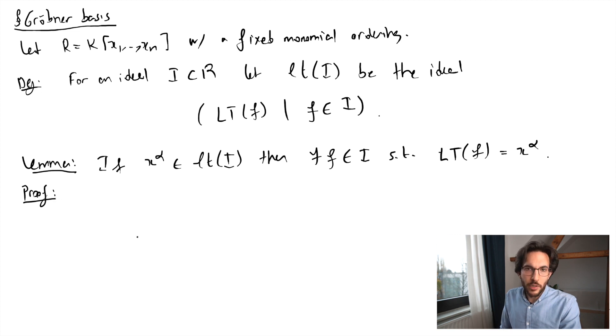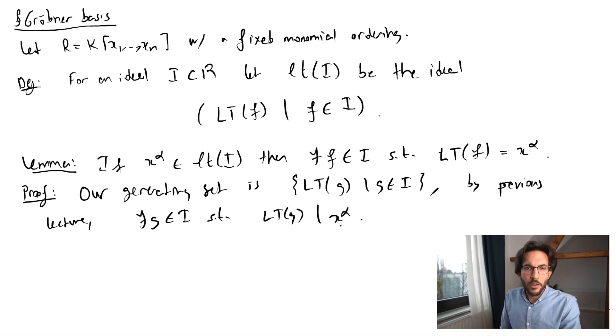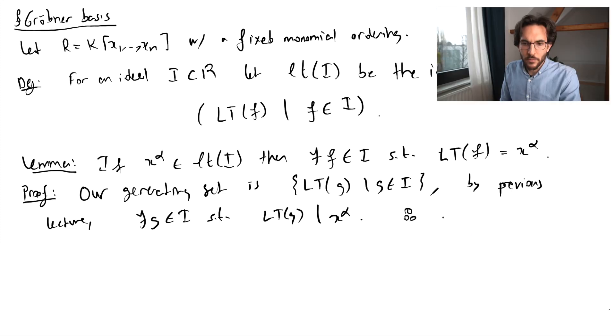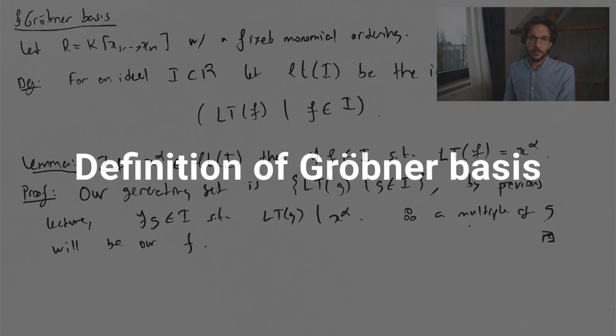So we're just going to reduce it to the simple observations that we have made about monomial ideals. One of them was that whenever you have a monomial inside a monomial ideal, then one of your generators divides this monomial. Now our generating set is just the leading terms of polynomials in i. And then by this observation, one of the elements in this generating set must divide x to the alpha. But then that's it. I multiply g with the inverse of its leading coefficient and whatever multiple is necessary to hit x alpha. This gives us our f, which has leading term x to the alpha.